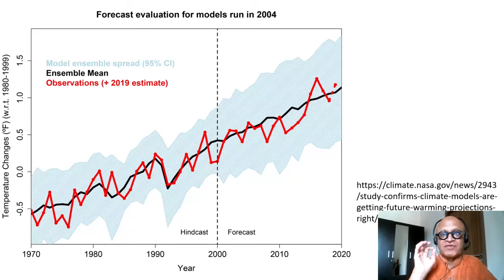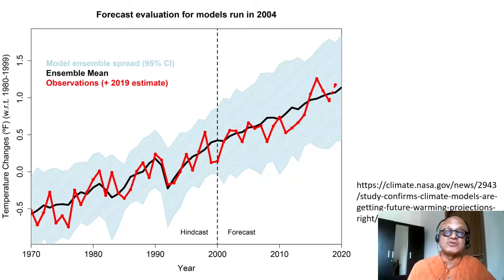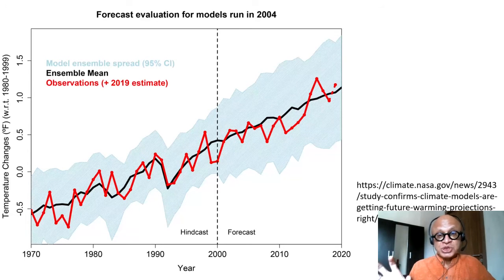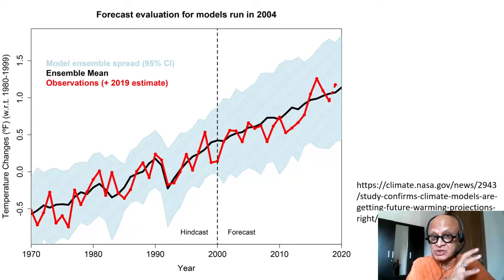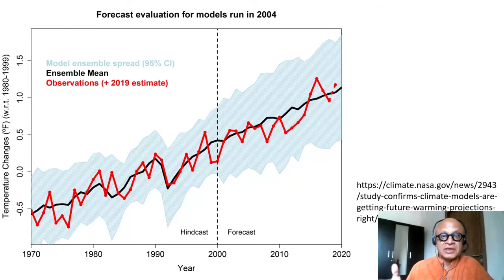Adaptation information has to be very region- and local-specific, and the current suite of models used for IPCC projections are not terribly good at producing very local information — for example, on sea level rise or precipitation change. They do have good skill for regional temperature change given all the human activities: emissions, land use change, reducing emissions by various sectors, and so on.